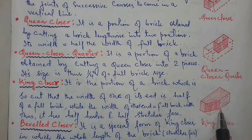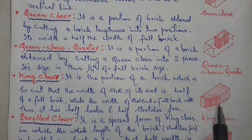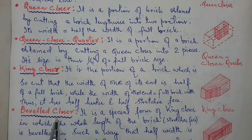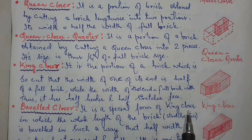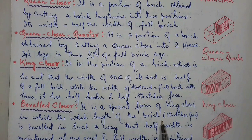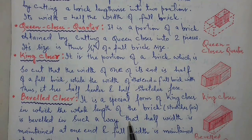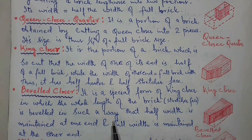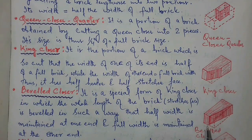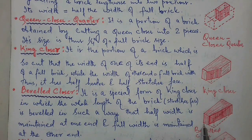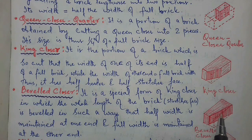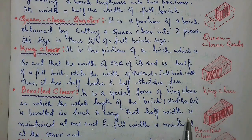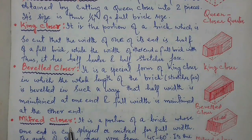Beveled closer: it is a special form of king closer in which the whole length of the brick is beveled in such a way that half width is maintained at one end and full width is maintained at the other end. As you can see in this figure, on one side half width is maintained, on the other side full width is maintained, and the brick is cut along its stretcher in a sloped manner — that is, it is beveled.